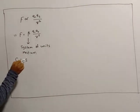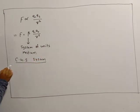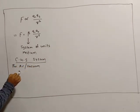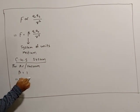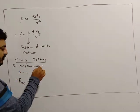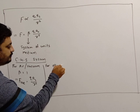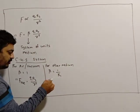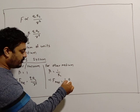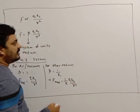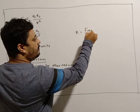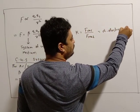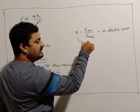We have already studied the CGS system. In the CGS system, for air or vacuum, beta equals 1. So F_vacuum equals Q1·Q2 divided by R squared. For any other medium, beta equals 1/K. So F_medium equals (1/K)·Q1·Q2 divided by R squared. Now, K equals F_vacuum divided by F_medium. K is called the dielectric constant, which is unitless and dimensionless.